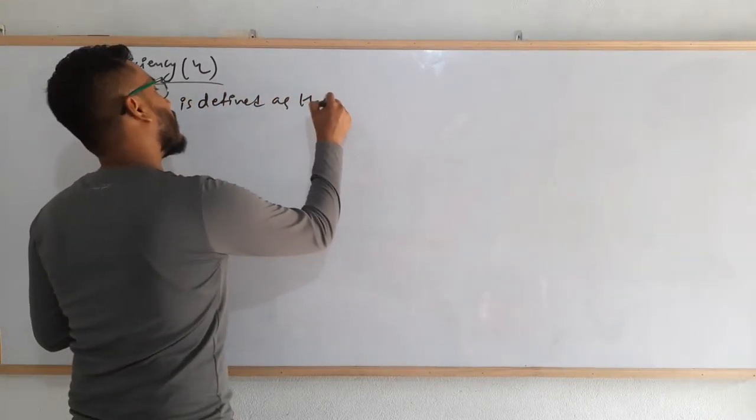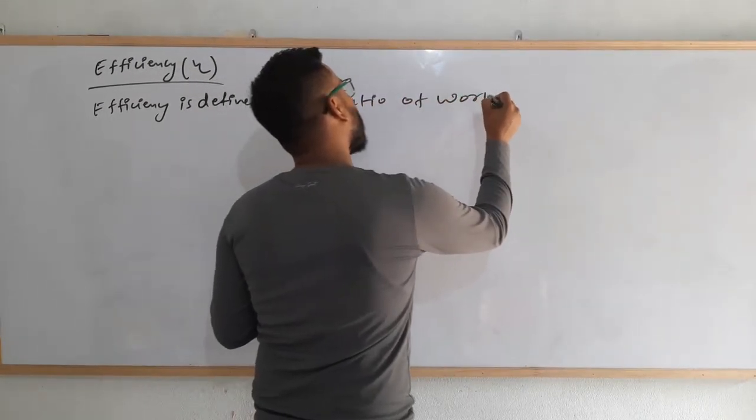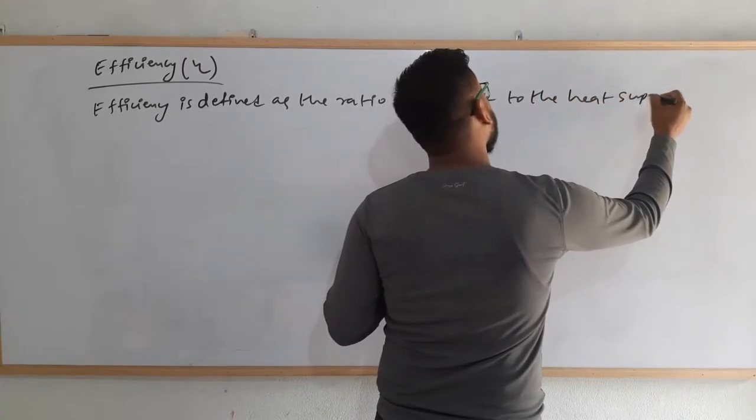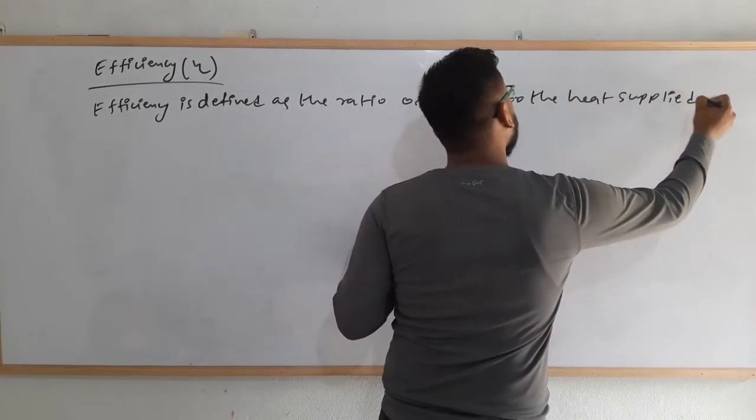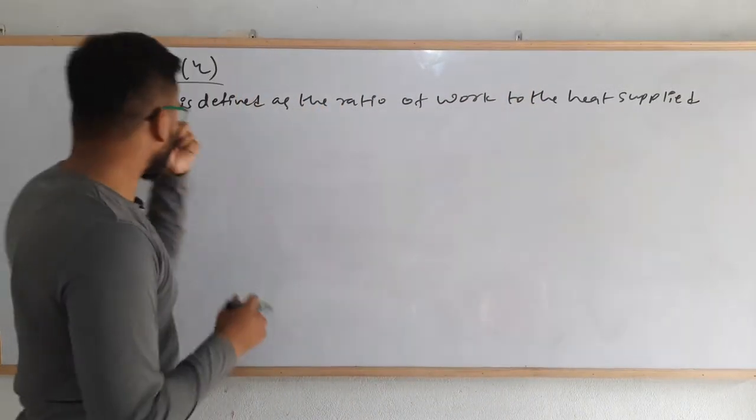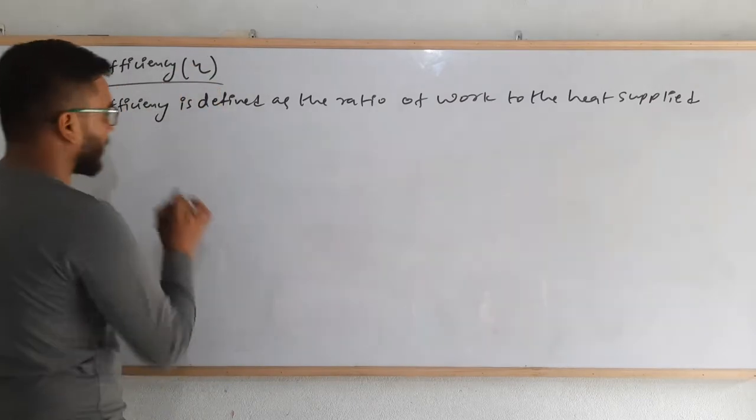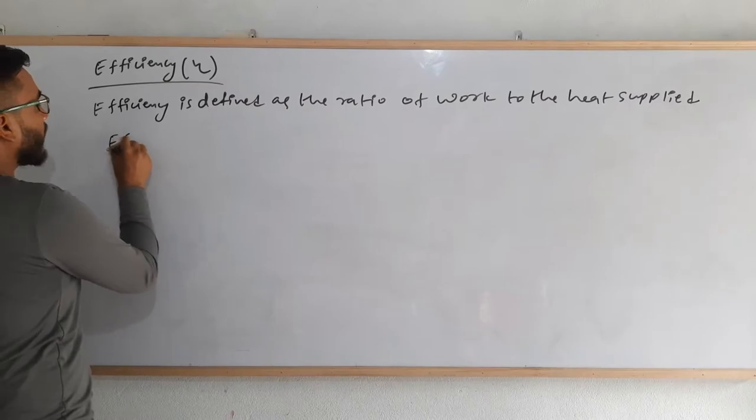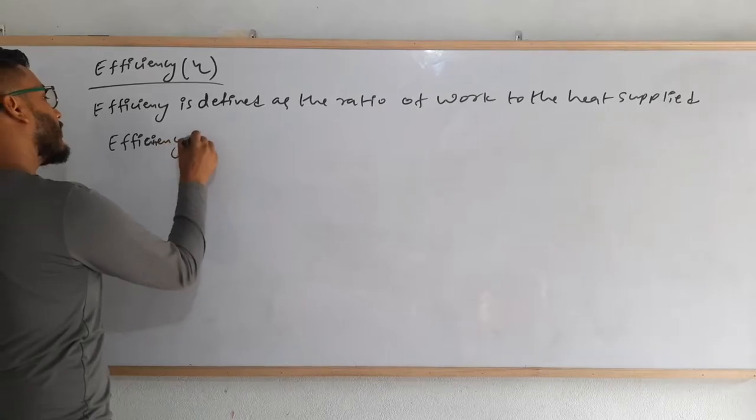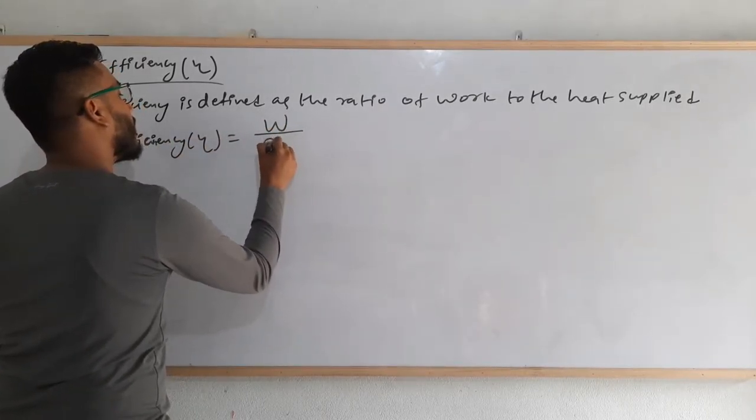Efficiency is defined as the ratio of work to the heat supplied. Whatever heat we supply and whatever work, the ratio of that is called efficiency. It is denoted by this symbol eta.